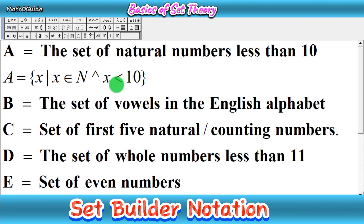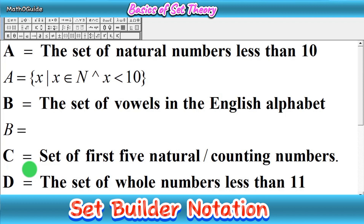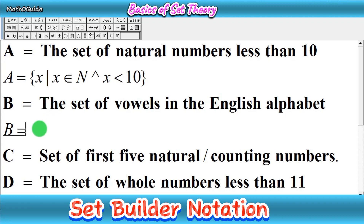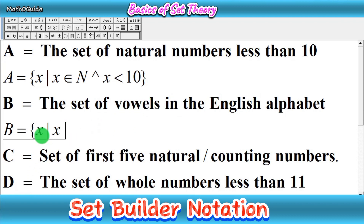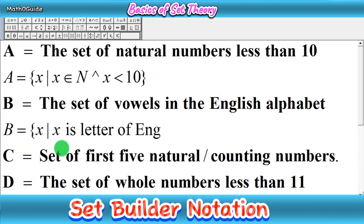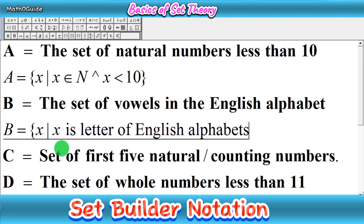We don't include 10 because there is no horizontal line — it is strictly less than 10. In the next part, set B is equal to the set of vowels. You can copy the same opening: X such that X belongs to. Here we have no special mathematical set name, so you write X such that X is a letter of the English alphabets. This is a very easy method to write sets in set builder form.